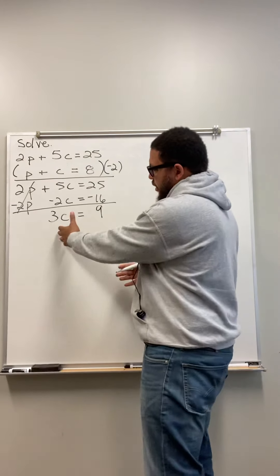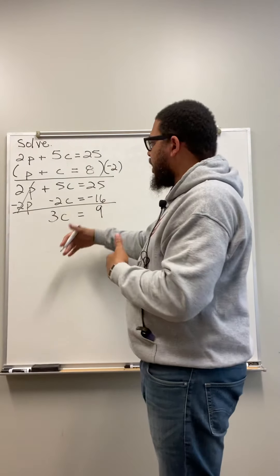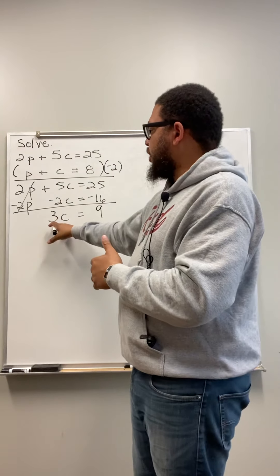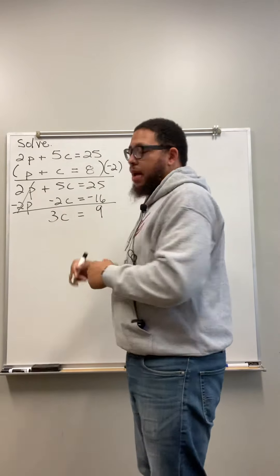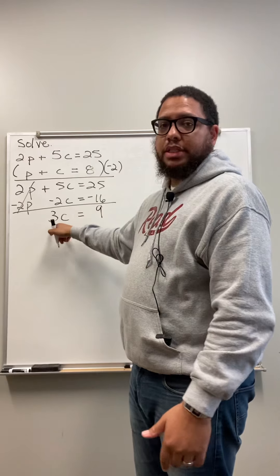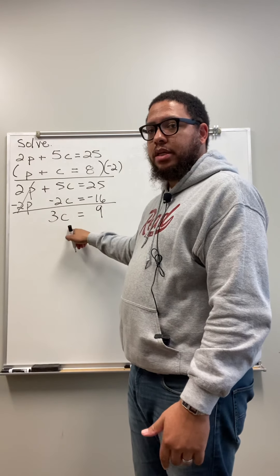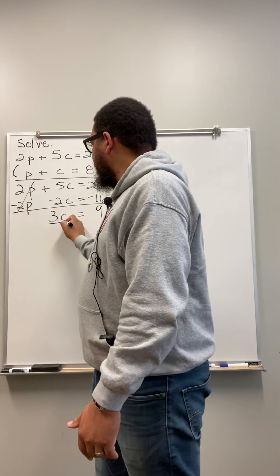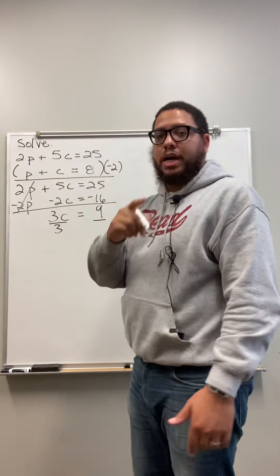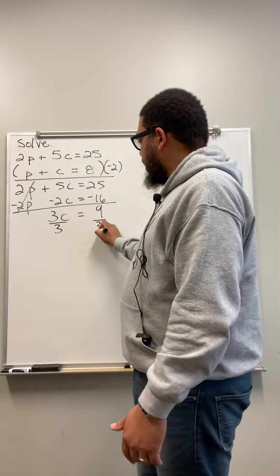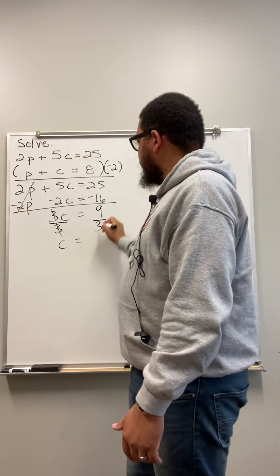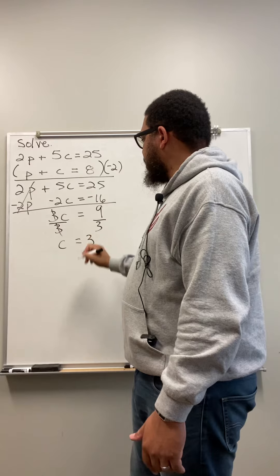So now I have 3C equals 9. In order to solve this, I need to isolate the C by itself. So I need to get rid of this 3. So I do the opposite operation from what the 3 is currently involved in. 3C means 3 times C. That's multiplication. The opposite of multiplication is division. But if I divide on the left side, I also got to divide on the right side. So, these 3's cancel out. That's going to give you C. 9 divided by 3 is going to be 3. So now my C is 3.